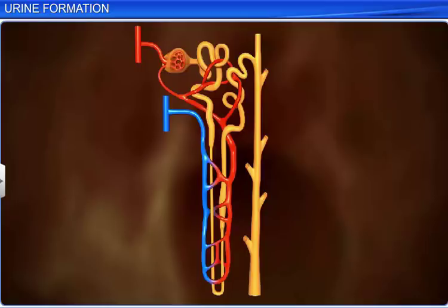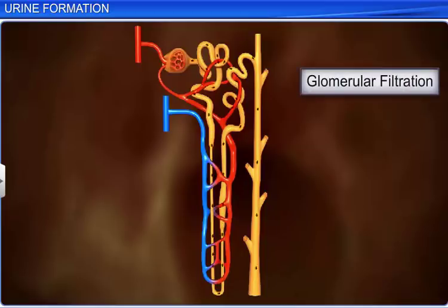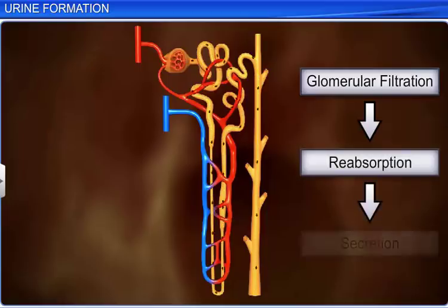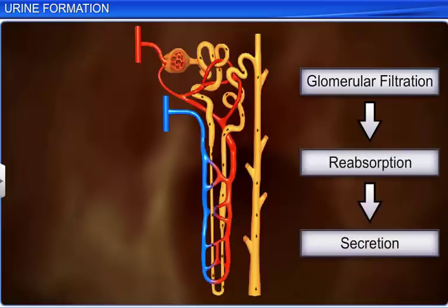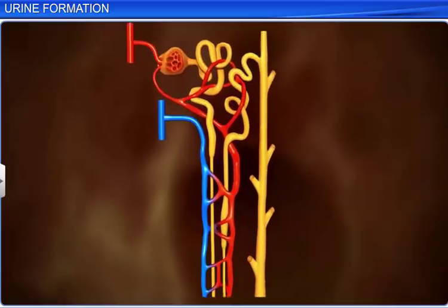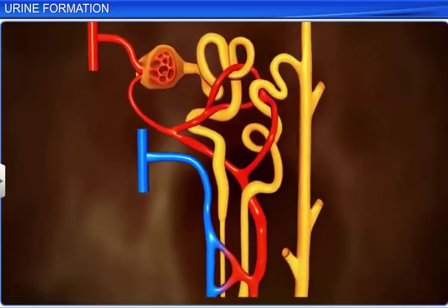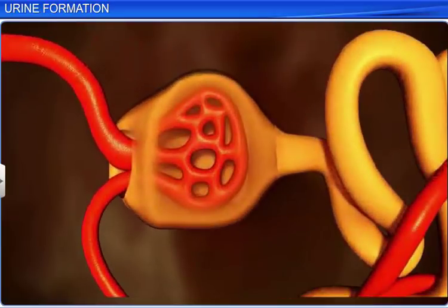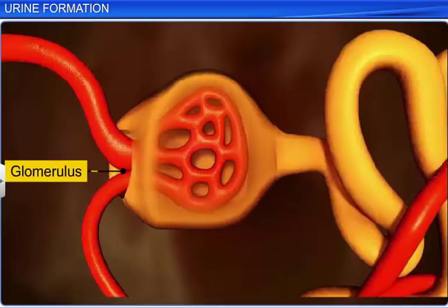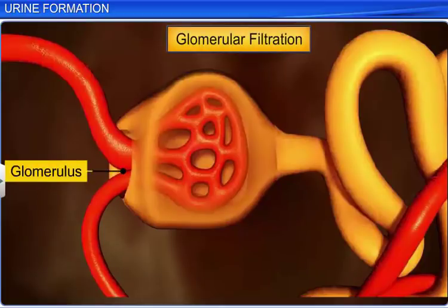Urine formation involves three major processes, namely glomerular filtration or ultrafiltration, reabsorption, and secretion. The first step in urine formation is the filtration of blood, which takes place in the glomerulus, and hence the name glomerular filtration.